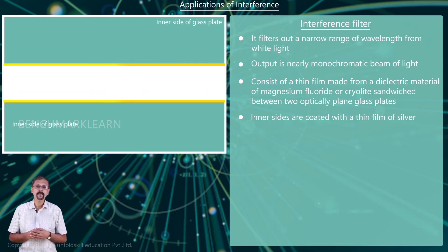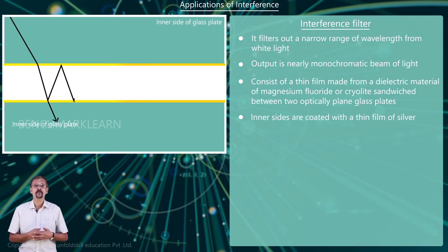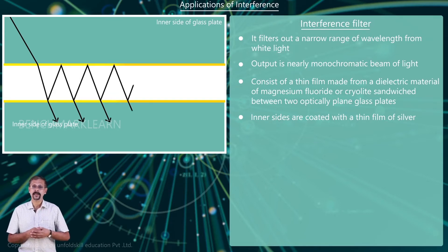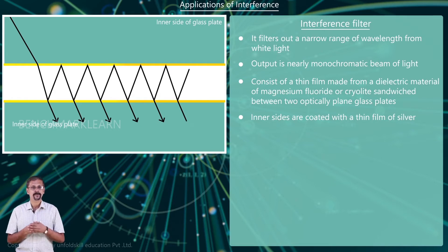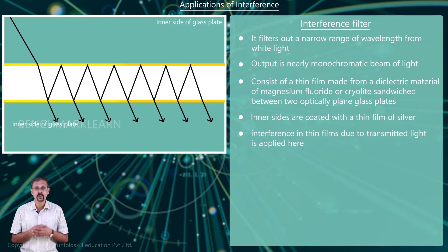When a beam of white light is incident normally on the arrangement, multiple reflections take place within the dielectric material and light with a narrow bandwidth emerges out. The principle of interference in thin films due to transmitted light is applied here.